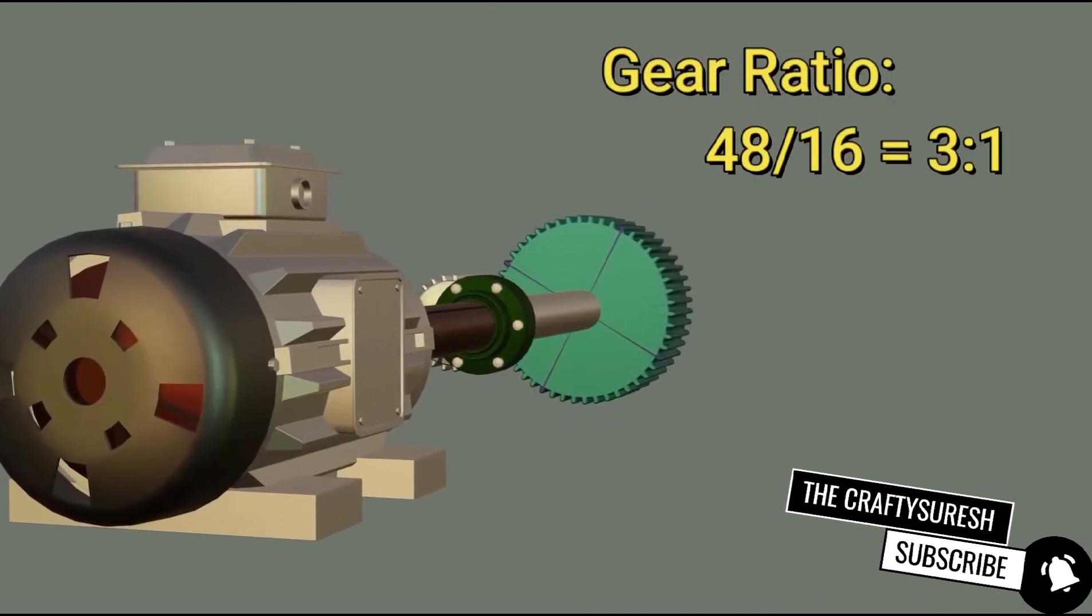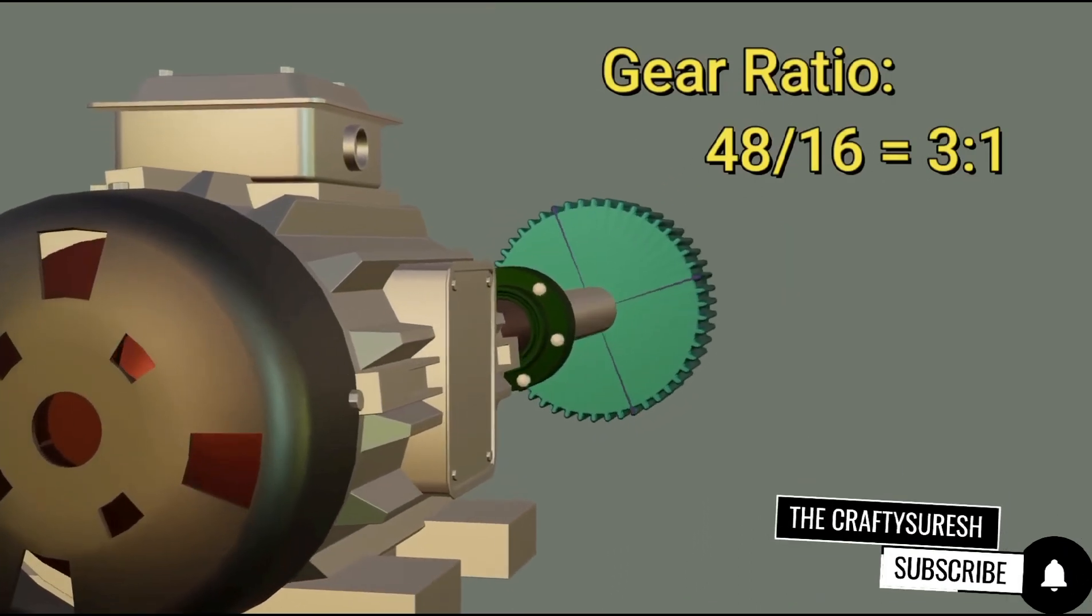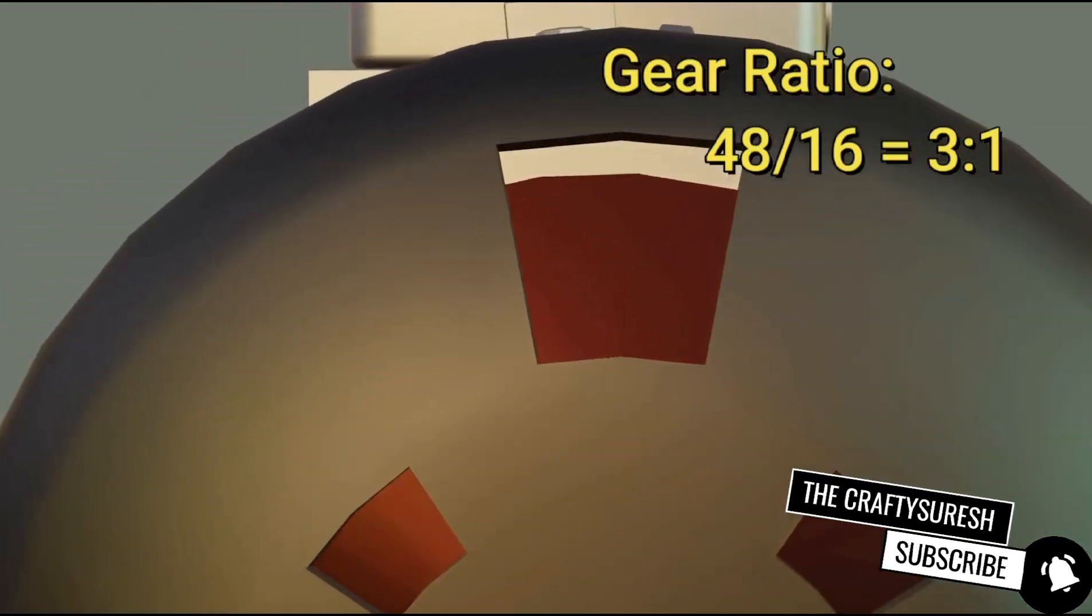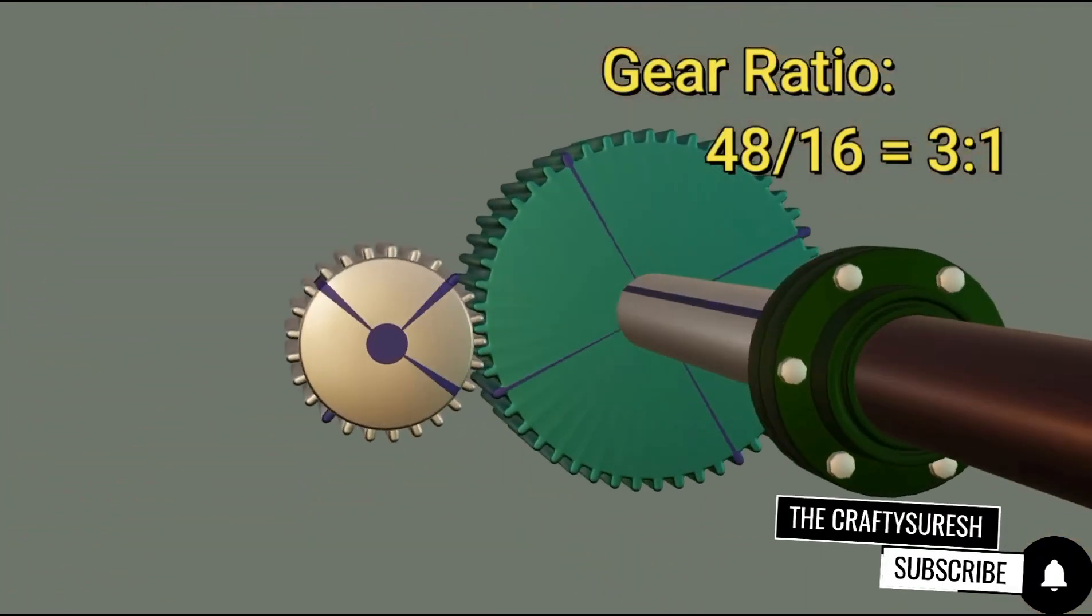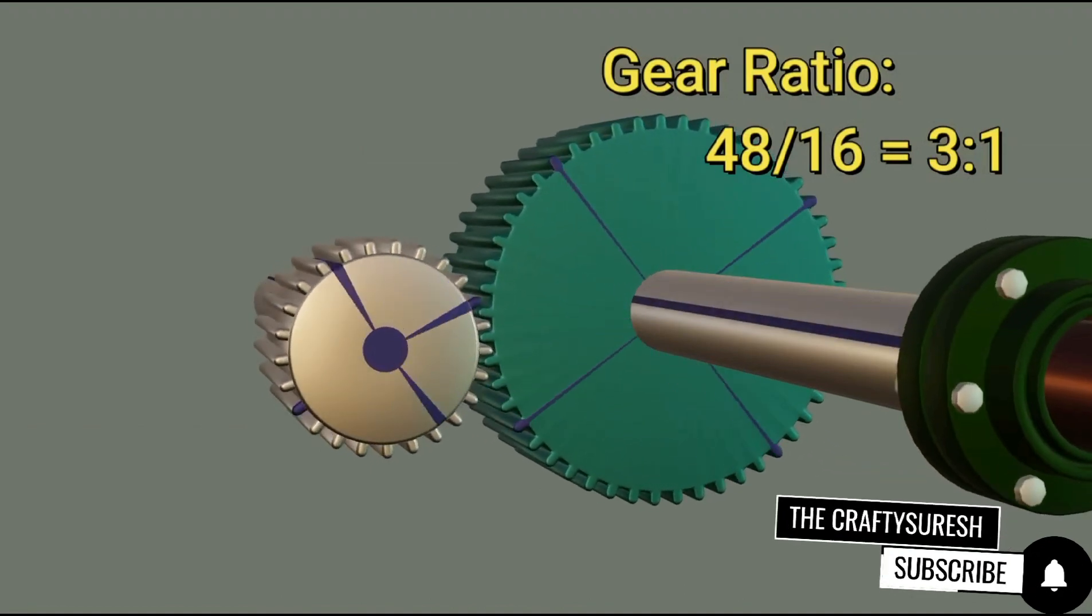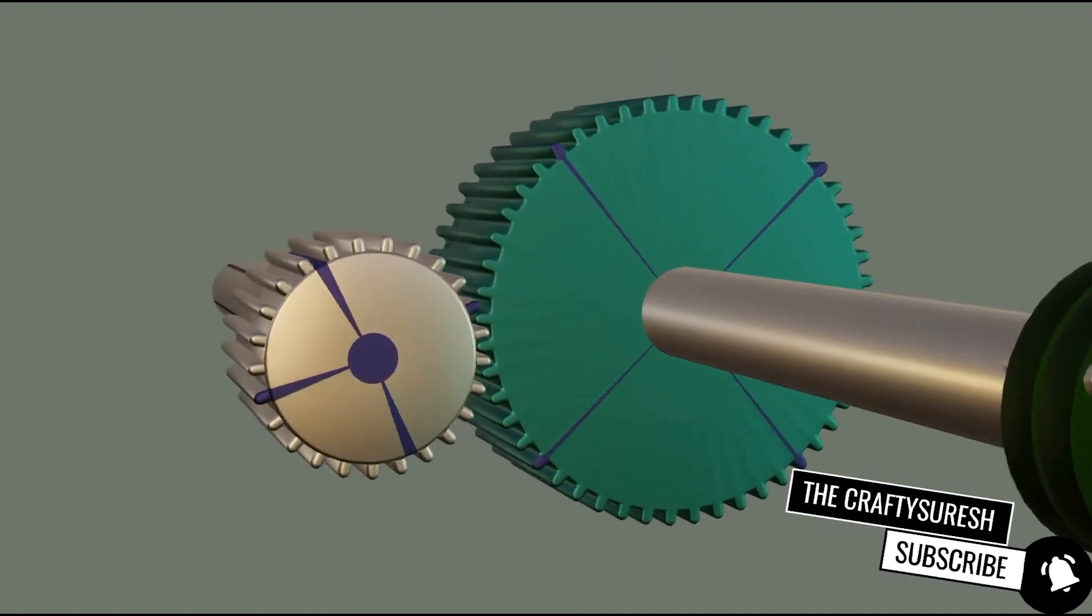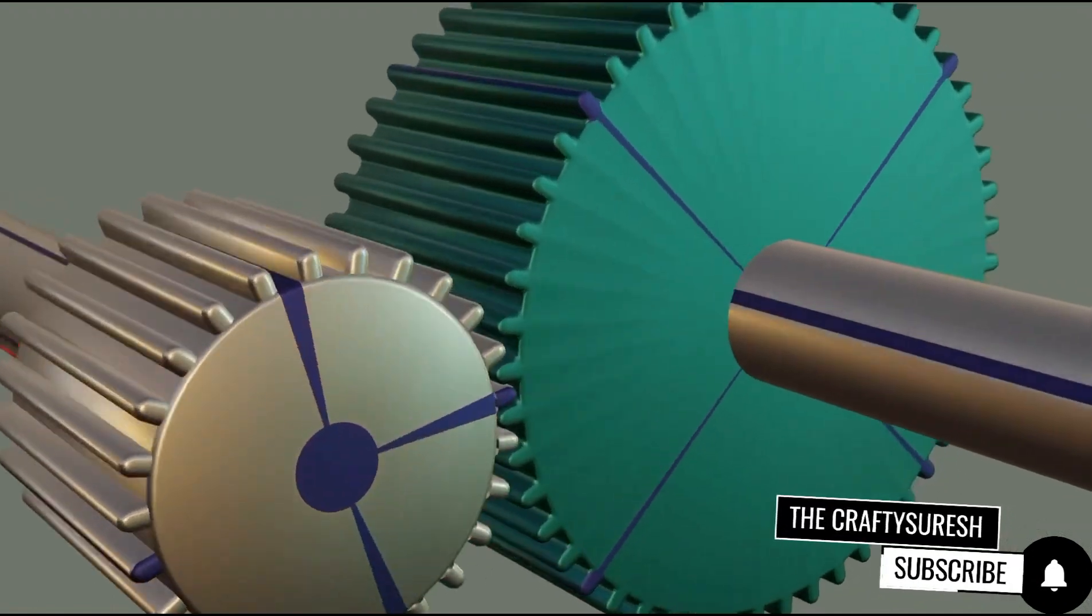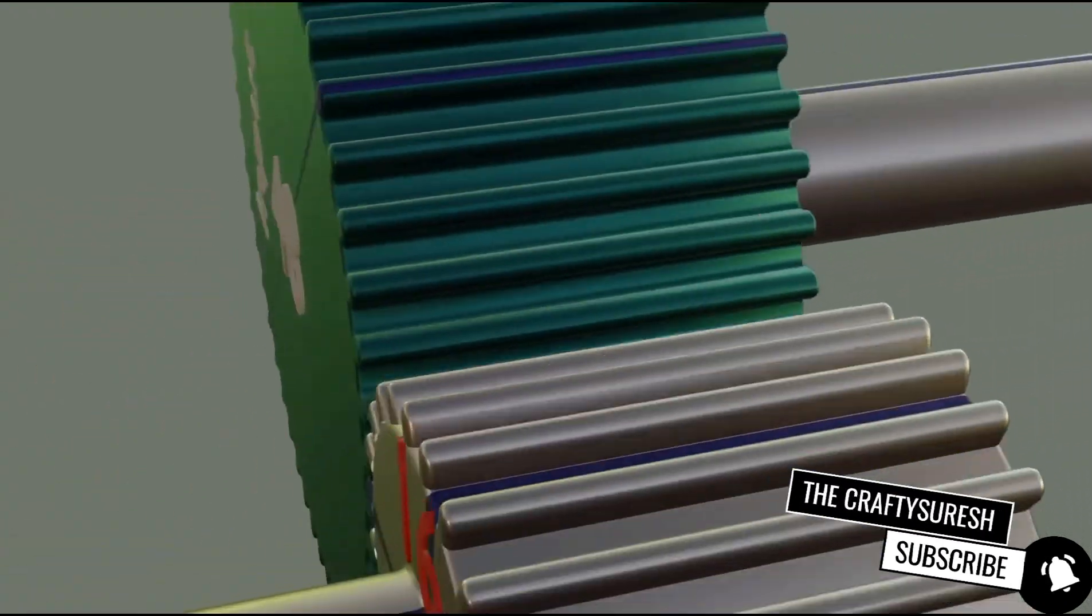Now let's understand gear ratio in simple language. If we power a big gear with a motor or an engine, then big gear will rotate 360 degrees once and small gear will rotate 3 times. Now this will have a huge advantage. If the speed is low, we can increase the speed by increasing the gear ratio.